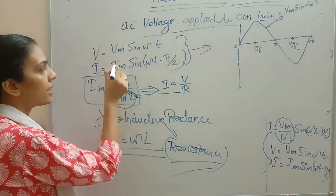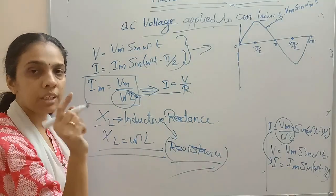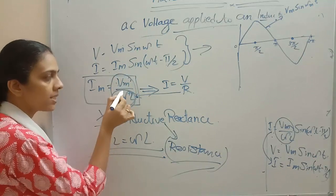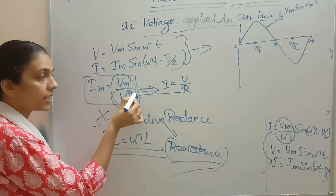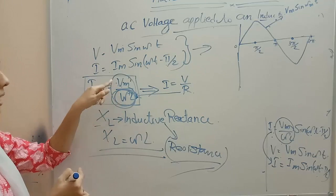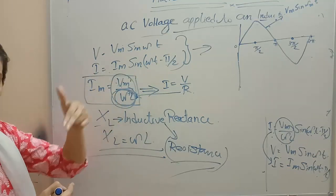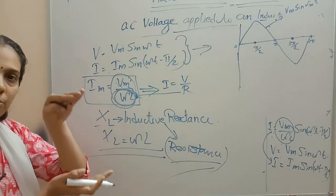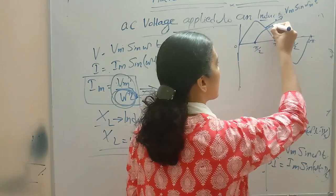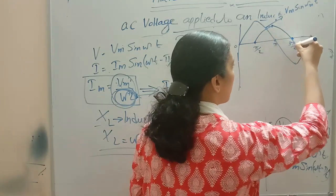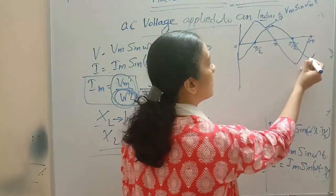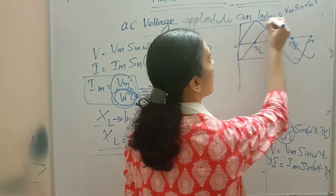Now, is the voltage and current changing in the same way? There is a difference. Im is decreasing by the factor ωL compared to Vm: Im equals Vm/ωL. So the amplitude of Im is less than Vm. The current waveform i equals Im·sin(ωt − π/2) has both a phase shift and a reduced amplitude compared to the voltage waveform.